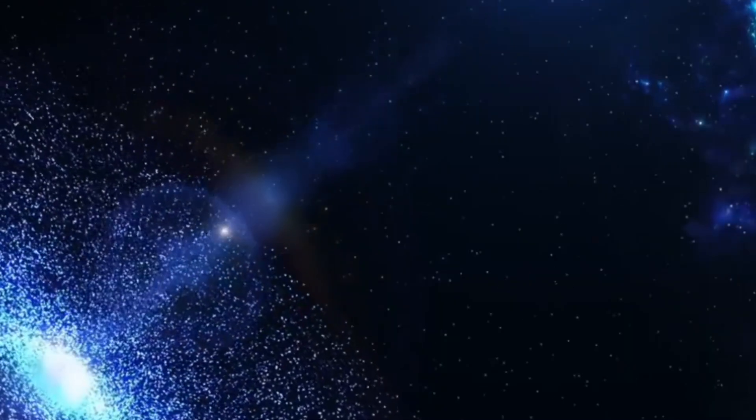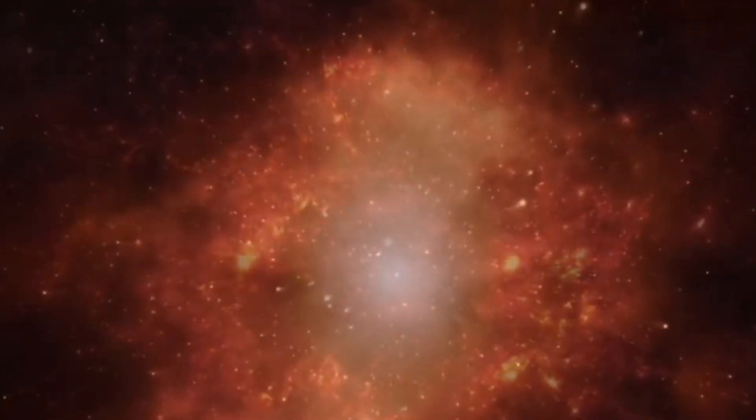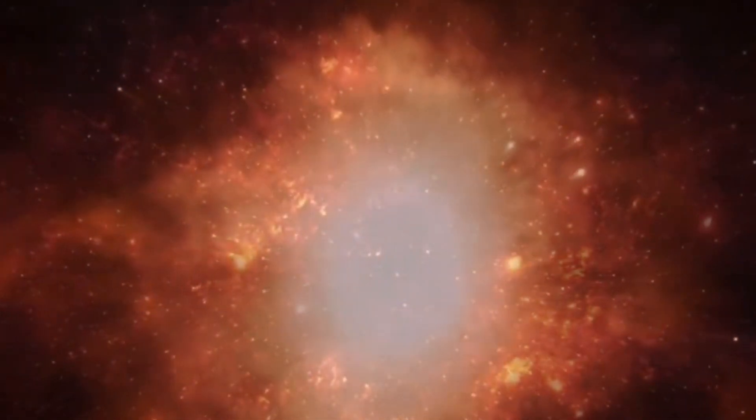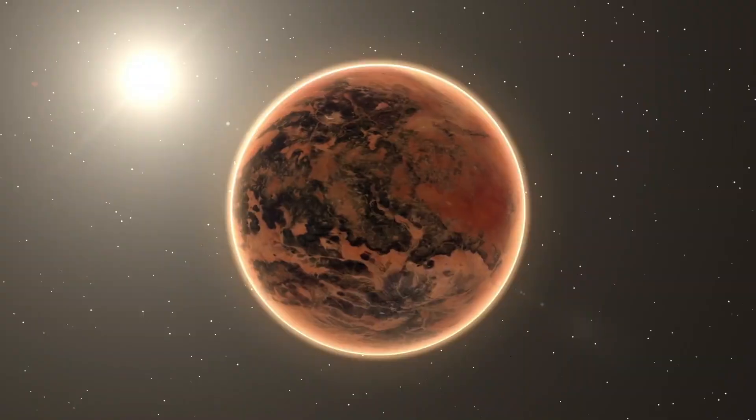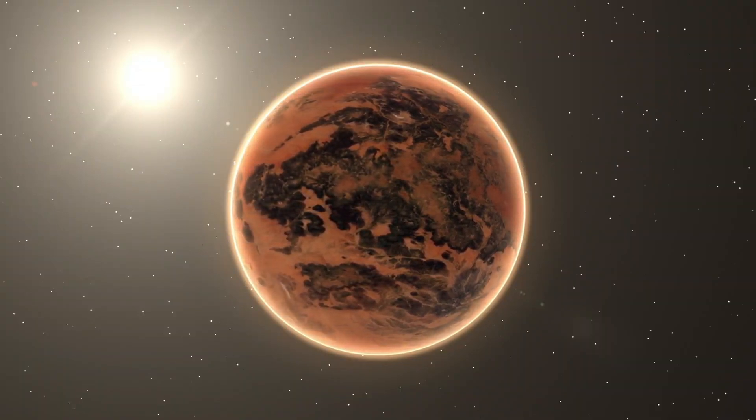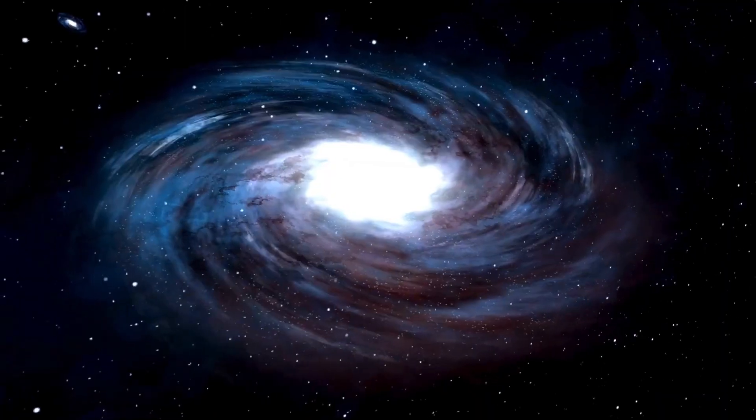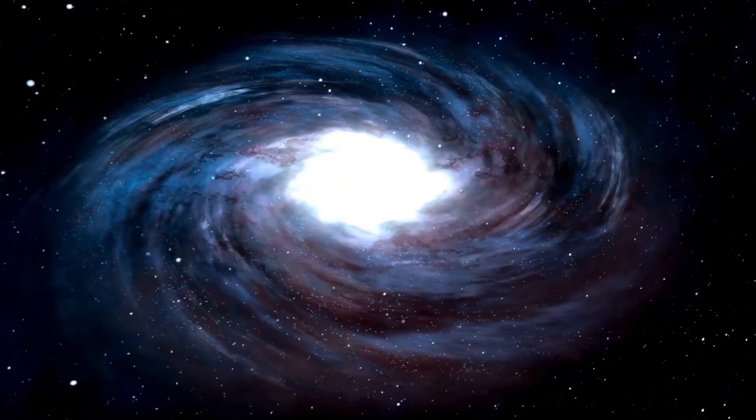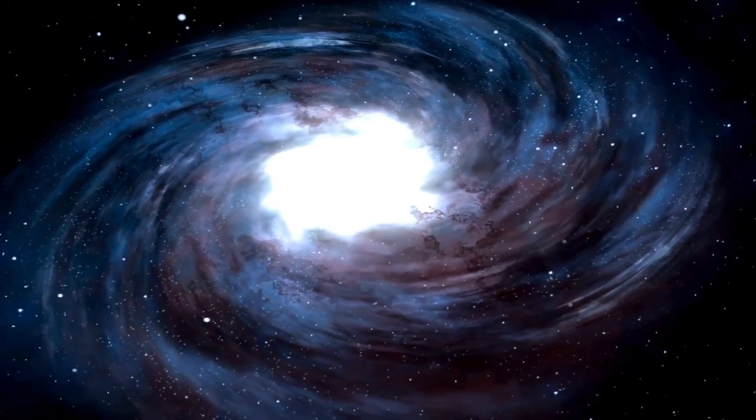Exoplanets are most commonly discovered through the changes they induce in their host stars. The gravitational influence of an exoplanet can cause its host star to wobble, and this radial velocity can be detected by astronomers. The Kepler Space Telescope utilized the transit method, which measures the dimming of a star's light when an exoplanet passes in front of it. This technique has provided significant data about exoplanets, including their size, distance, and temperature.